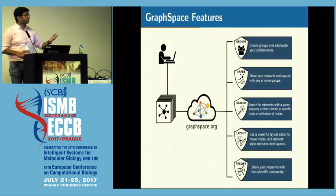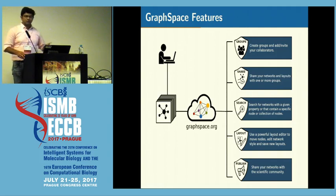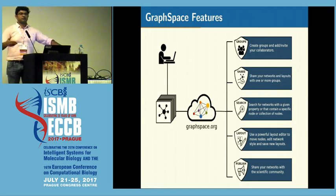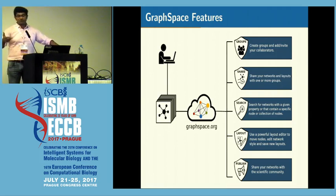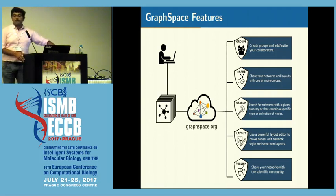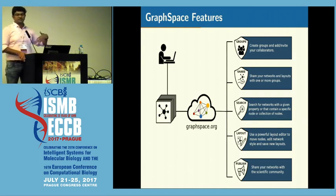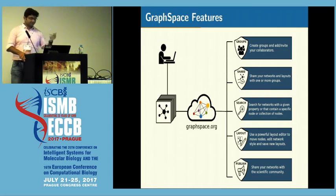So to address these challenges and to stimulate interdisciplinary collaboration, Graphspace offers several features like creating collaborative groups, sharing these networks and layouts with your collaborators, searching across multiple networks, creating and managing multiple layouts of a network, and finally releasing these networks to the scientific community.